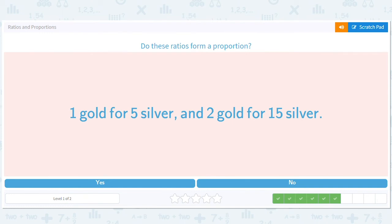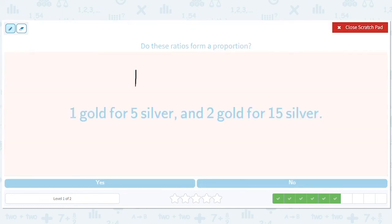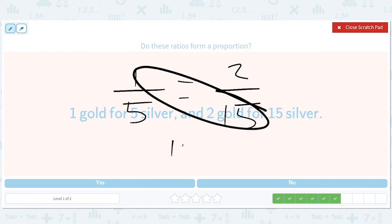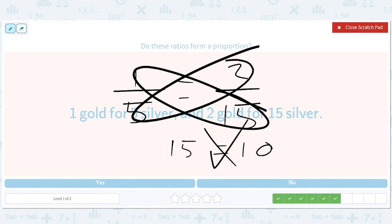One gold for five silver or two gold for 15 silver. 15 equals 10. No, it doesn't. So these are not in proportion.